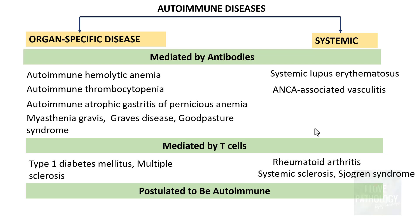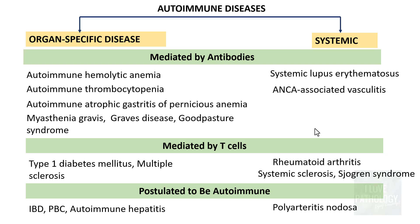The third category is diseases postulated to be autoimmune. Organ-specific examples include inflammatory bowel disease with a suspected immune response against intestinal contents; primary biliary cirrhosis where immune cells attack the bile ducts; and autoimmune hepatitis where the immune system reacts against hepatocytes. The systemic postulated autoimmune disease is polyarteritis nodosa, where there is suspected immune cell infiltration of blood vessel walls leading to inflammation and necrosis.